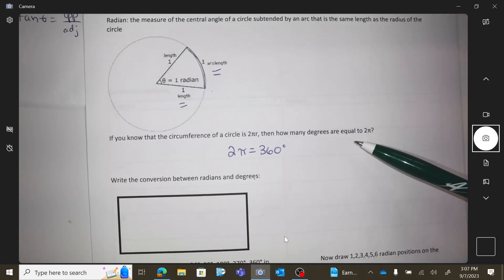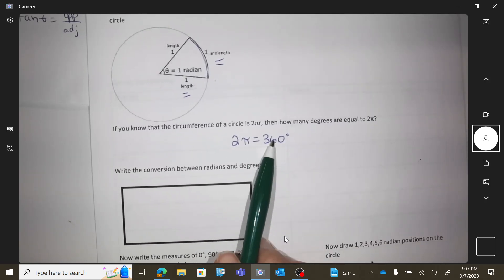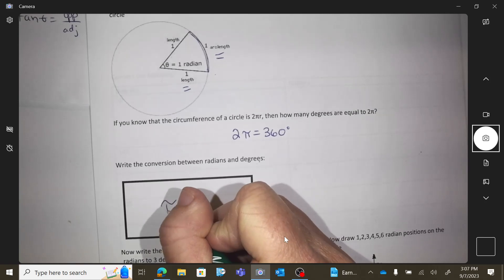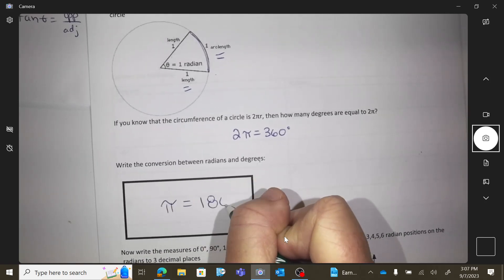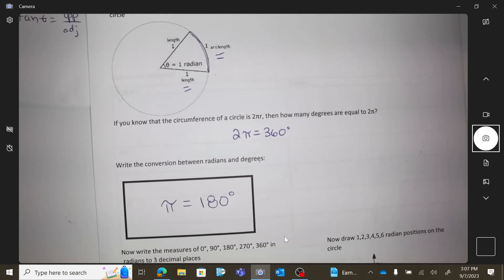Okay, then just to make life also easier, we're always going to divide this by 2 so that we can use π equals 180 as the universal conversion.